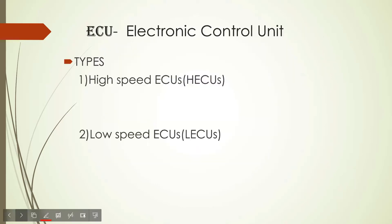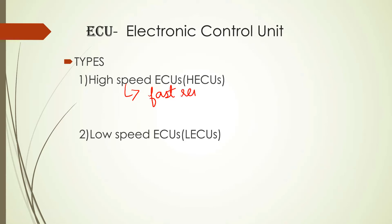ECUs are of two types: one is high-speed ECU and the other is low-speed ECU. High-speed ECU means, from the word itself, the response is fast. When should the response be fast? The response should be fast when we use a critical system. A critical system is a system in which the response should be very fast; otherwise, it will cause great damage to life and property.